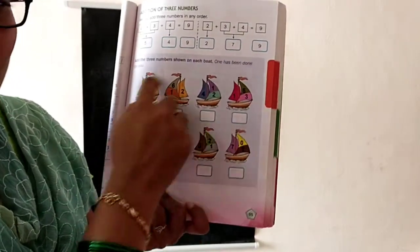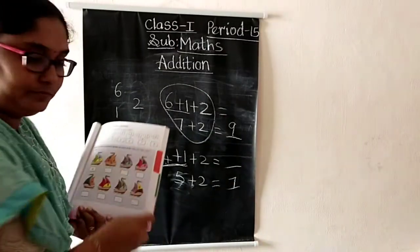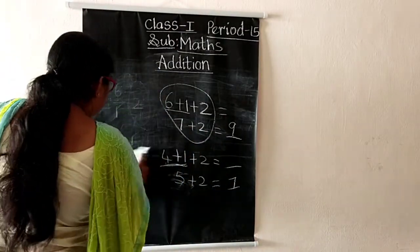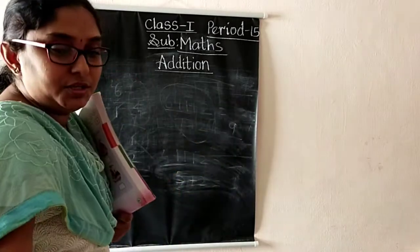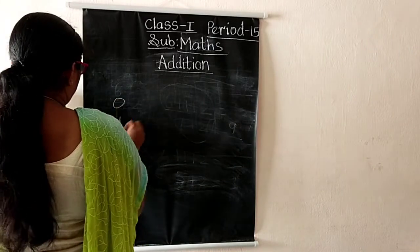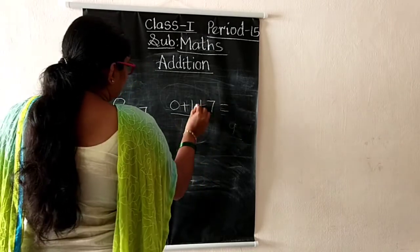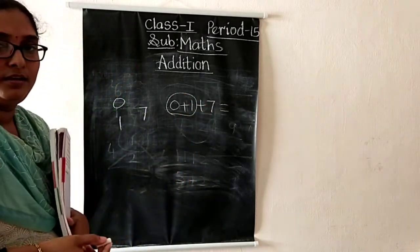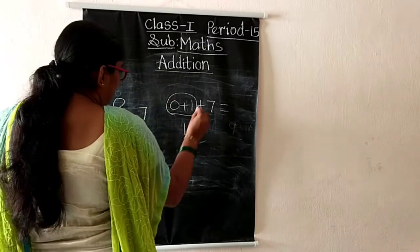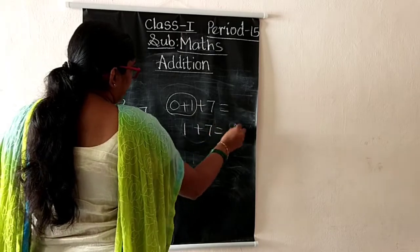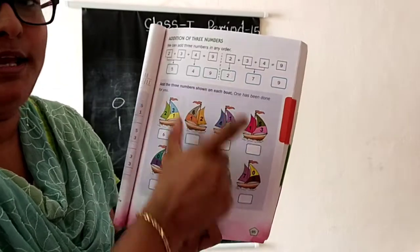You should complete the whole exercise. Here they have given zero plus one plus seven. Zero plus one equals one. One plus seven equals eight. Like this you have to complete this whole exercise.